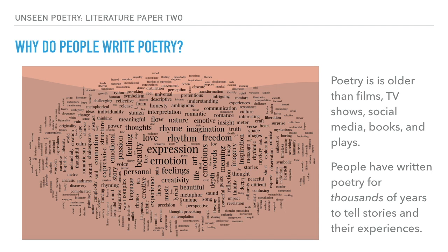Poetry is older than pretty much any form of entertainment you are familiar with now. Poetry came first, and it originated in the idea of oral storytelling — gathering around the campfire to share experiences and stories. The idea of rhythm and rhyme that we're familiar with in poetry came from this tradition, because you would want people to remember the story. If you're just listening and can't go back to re-read, then repetition, rhythm, and rhyme are really useful. Think about nursery rhymes from your childhood — you can probably still remember some of them because of the power of rhyme.